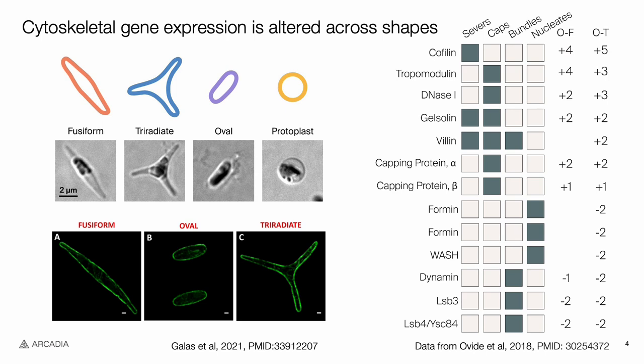Further, recent work looking at the differential gene expression across cell shapes indicated that actin capping and severing proteins have an inverse expression relationship with bundling and nucleating proteins when comparing fusiform or tri-radiate cells with oval cells. This further suggests a role for actin in the cell morphology decision making.